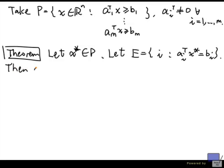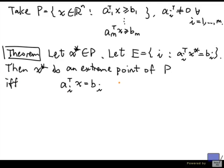Then x star is an extreme point of P if and only if the system Ai transpose x equal to bi where i is in E has a unique solution.